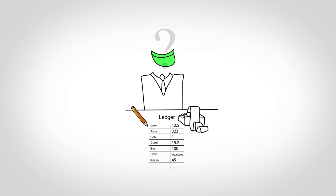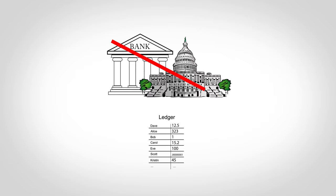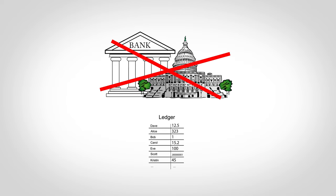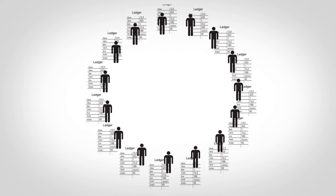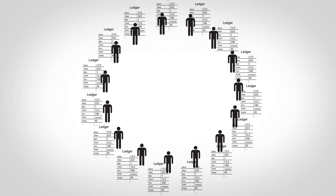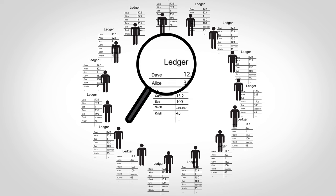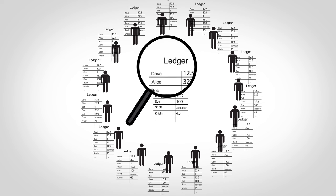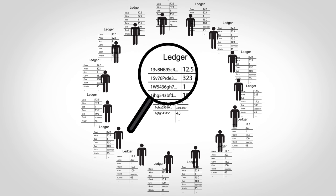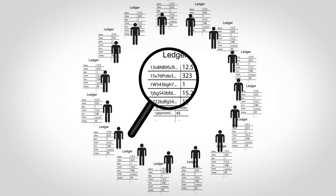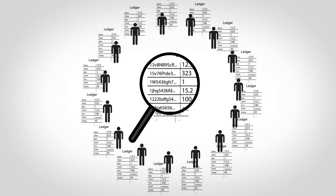So who maintains this ledger and makes sure no one cheats? One goal of Bitcoin is to avoid any centralized control, so every participant maintains their own copy of the ledger. One surprising consequence of this is that everyone can see everyone else's balances, although the real system only uses account numbers and not names, so there's some level of anonymity.